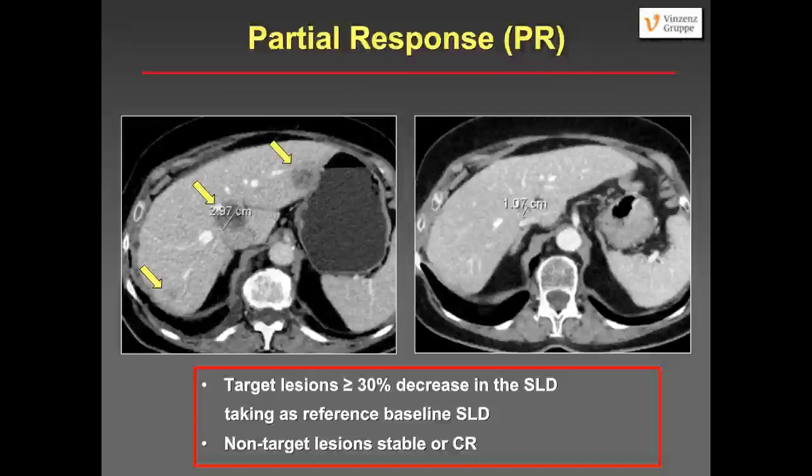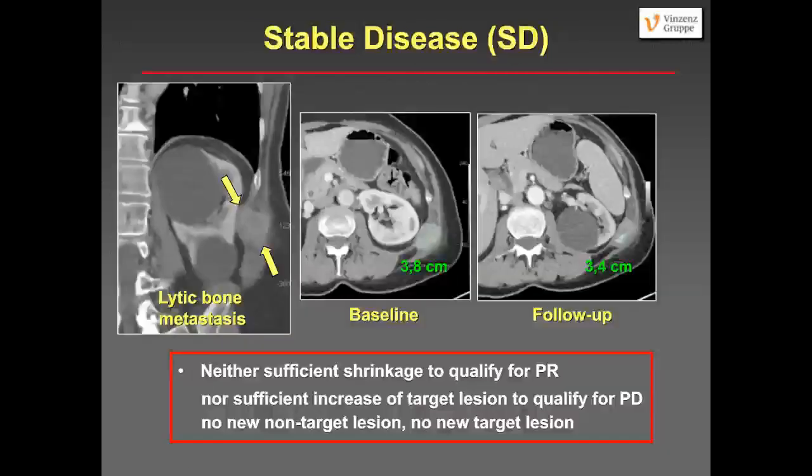What is stable disease? Neither sufficient shrinkage to qualify for partial response, nor sufficient increase to qualify for progressive disease. Here is a patient with a lytic bone metastasis included as a target lesion — a lytic rib metastasis. On the baseline scan the soft tissue component measures 3.8 centimeters. On follow-up it is 3.4 centimeters — getting smaller by roughly 10%, but clearly not a partial response. So this is stable disease.